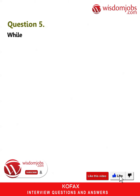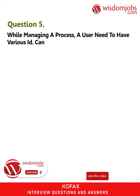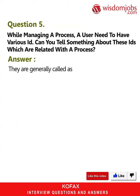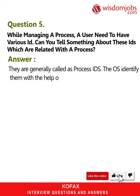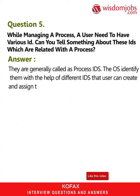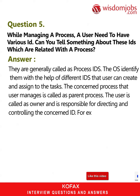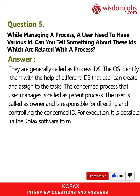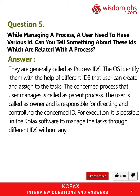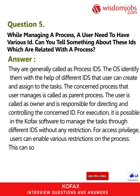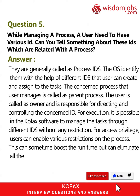Question 5: While managing a process, a user needs to have various IDs. These are generally called process IDs. The OS identifies them with the help of different IDs that the user can create and assign to tasks. The process that the user manages is called the parent process, and the user is called the owner, responsible for directing and controlling the concerned ID. Users can enable various restrictions on the process, which can sometimes boost runtime and eliminate bugs and errors.